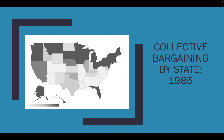By 1985, there were a little more darker spots on the map — a little more spread of these rights. This is kind of the peak of public employee collective bargaining, with not much action in extending these rights after this point comparatively speaking. You'll notice there are almost no collective bargaining rights for public employees in the southern states.